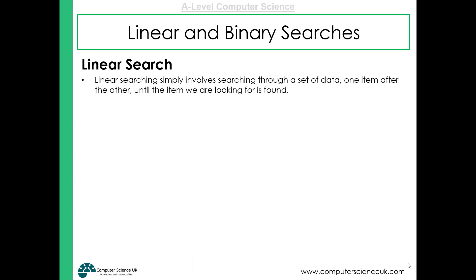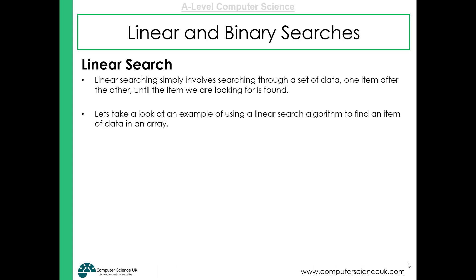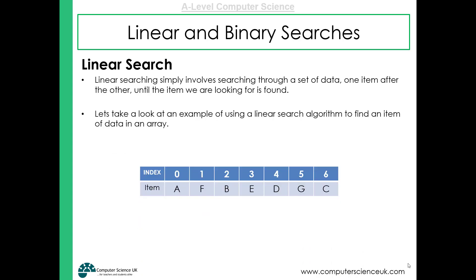The linear search algorithm is very straightforward in how it works. It's also known as the serial search, and ultimately all it does is look at a set of data. You provide the algorithm with the item that you want it to find, and it will look through each item in the set of data in turn until it finds the one it's looking for.